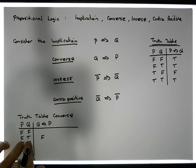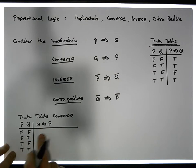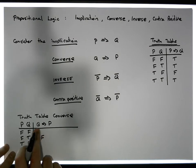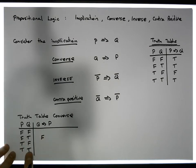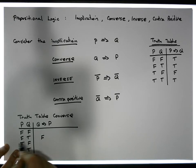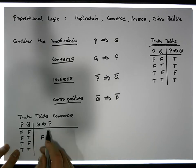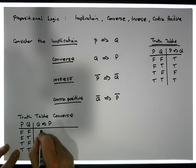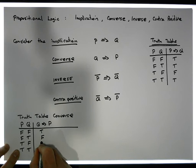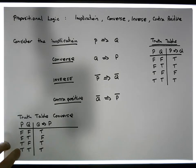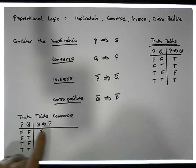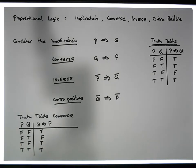Have we got any other true-falses? The premise is Q, so here's a true, but there's another true in the conclusion. So there are no other true-falses going from the premise to the conclusion. So everywhere else it must be true. This is our truth table for our converse.